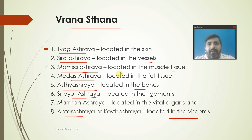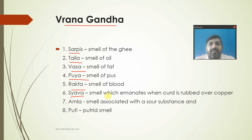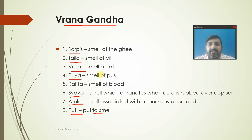Next coming to Gandha of ulcer - the 8 different smells from ulcer: Sarpi Gandha (smell of ghee), Thaila Gandha (oil smell), Vasa Gandha (smell of fat), Phuya Gandha (smell of pus), Rakta Gandha (smell of blood), Shyava Gandha (smell emitted when curd is rubbed over copper), Amla Gandha (smell associated with sour substances), and Puti Gandha (putrefied smell).